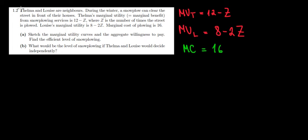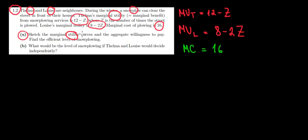Let's start working on question 1.2. We have two neighbors, Thelma and Luis. During the winter, a snowplow can clear the street in front of their houses. The marginal utility of Thelma from snowplowing services is 12 minus Z, and 8 minus 2Z is the marginal utility for Luis. The marginal cost of plowing is 16. In part A, we want to sketch the marginal utility curves and the aggregate willingness to pay, and find the efficient level of snowplowing.